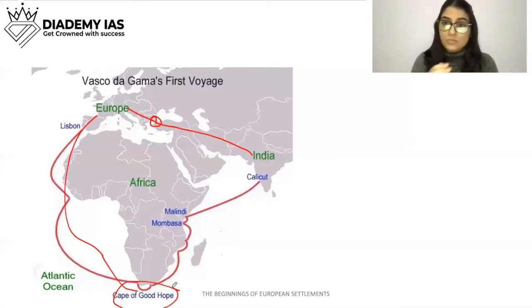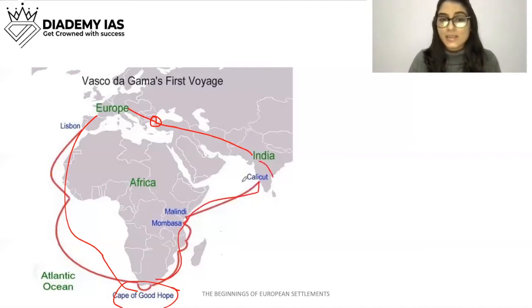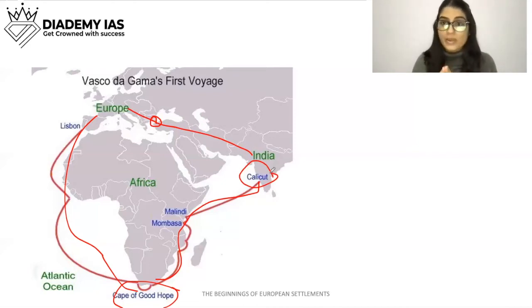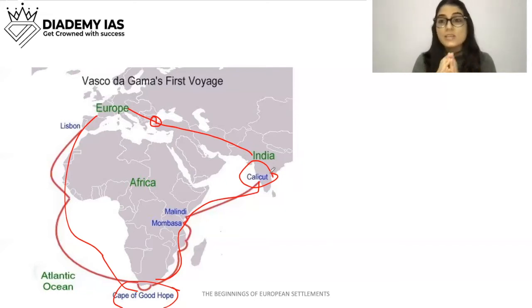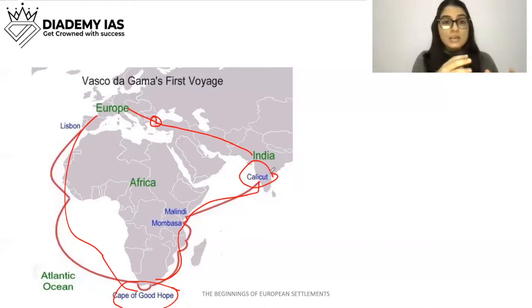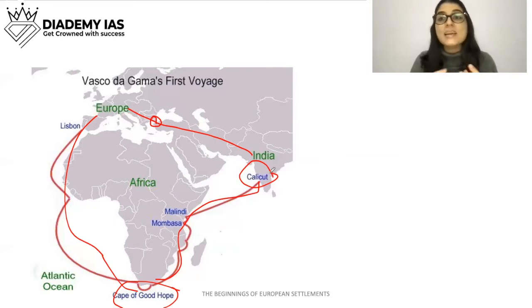They reached the Cape of Good Hope and through this way reached Calicut in India. So this is a new trade route between India and Europe — a new trade route was finally established, and a new chapter started. The Portuguese came first and traded, and they had a lot of profits. Seeing their 60% profit margin in Europe, other European merchants also got tempted to trade directly with India.